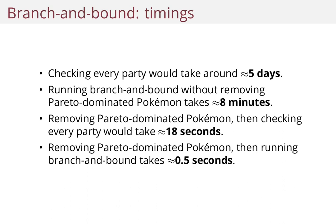If I remove the dominated Pokemon and then check every party naively instead of using branch and bound, it would take 18 seconds. But if I both remove Pareto-dominated Pokemon and use branch and bound, it takes around half a second to get an optimal solution.